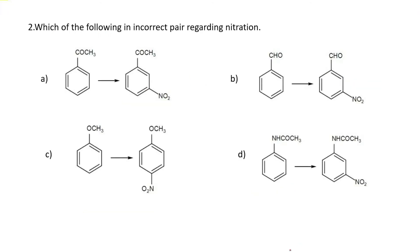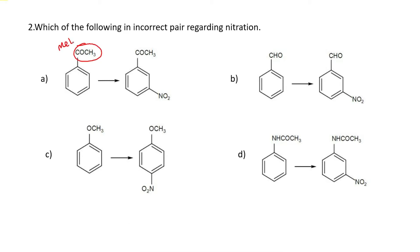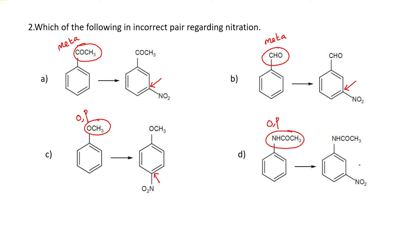Question number two: which of the following is an incorrect pair regarding nitration? In the first option, acetophenone has COCH3 as a meta-directing group and NO2 is substituted at meta position accordingly. In option C, anisole has OCH3 which is an ortho-para directing group, but NO2 is substituted at meta position instead of para position. In the last option, NHCOCH3 is an ortho-para directing group but NO2 is substituted at meta position instead of para position — so that is the incorrect pair.